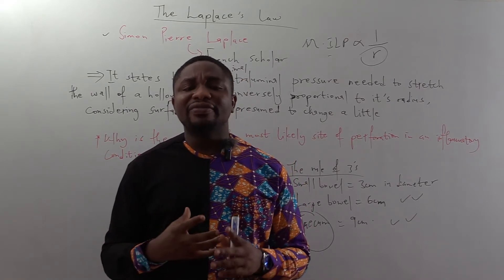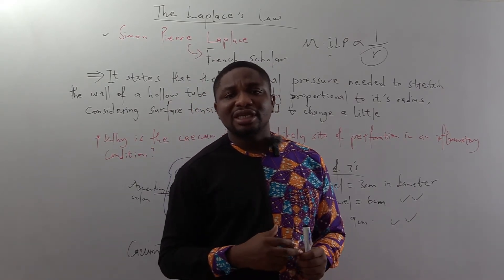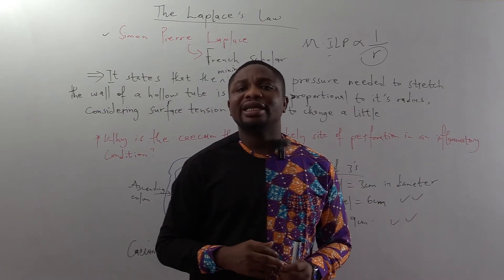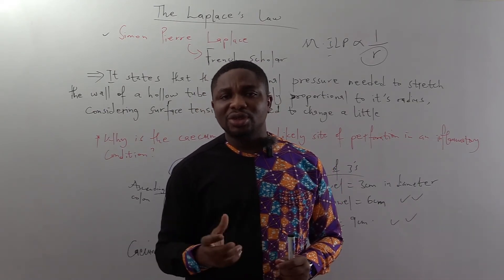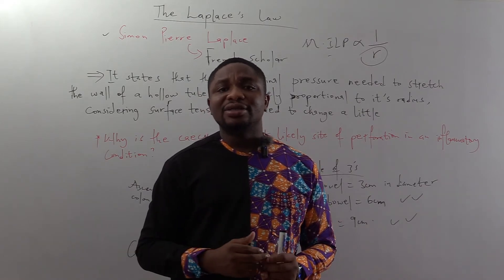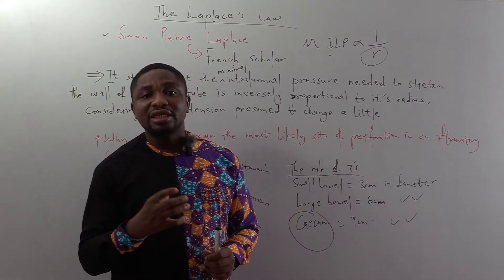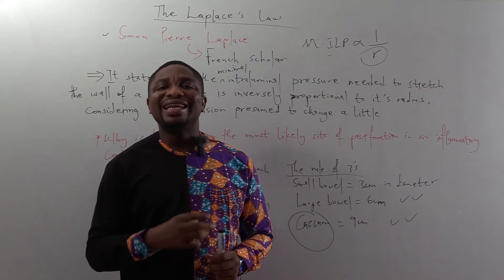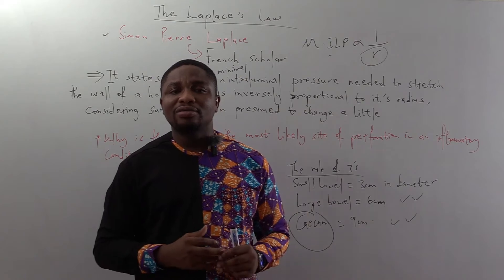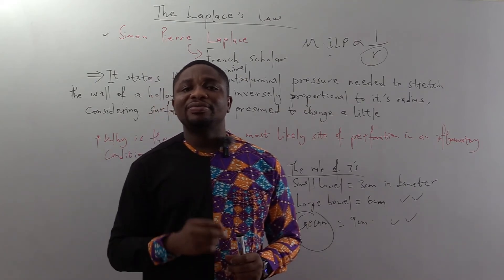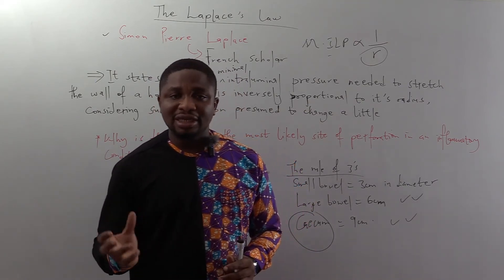And in that case, in stretching the cecum, if its elastic limit is reached, then it can easily perforate. To distend the cecum to the point where it can easily perforate, you will need the least intraluminal pressure along the bowel because the diameter of the cecum is the greatest.